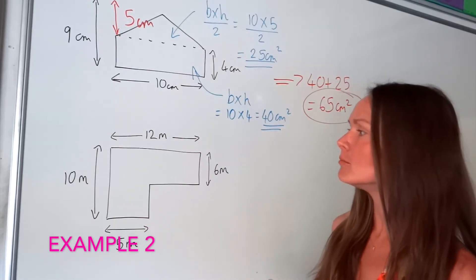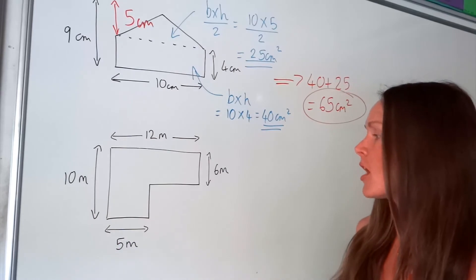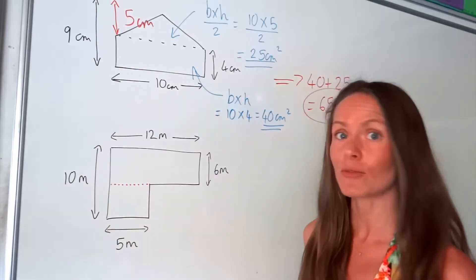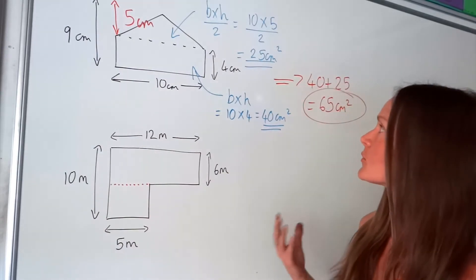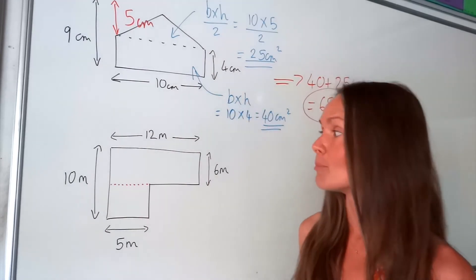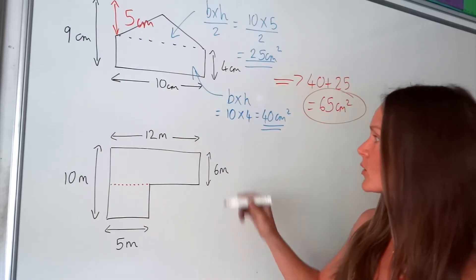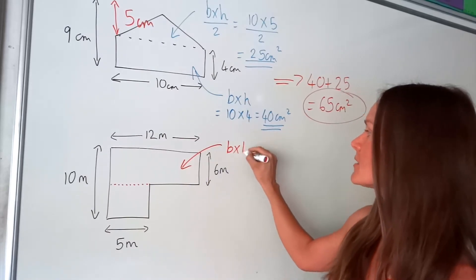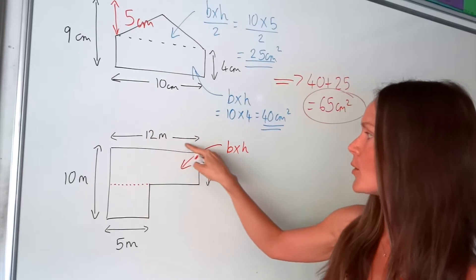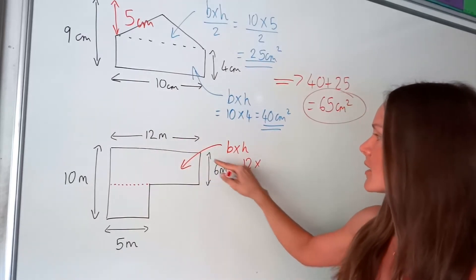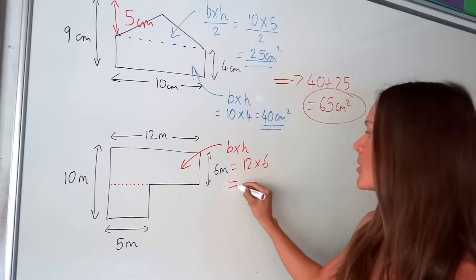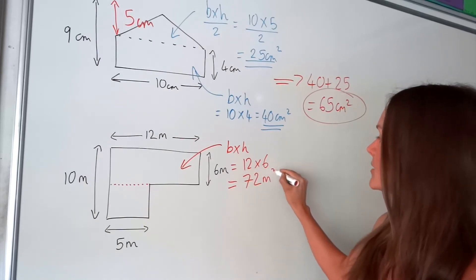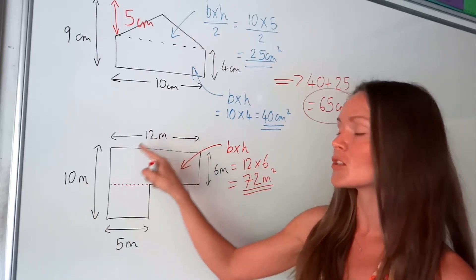Down here we've got more than one way of doing this question. I'm just going to split this funny-looking compound shape into two different rectangles. Remember, the formula to work out the area of a rectangle is base multiplied by height. So I can automatically work out the area of this big rectangle here — the base is given at the top as 12, and the height is 6. So 12 multiplied by 6 gives me 72 metres squared.